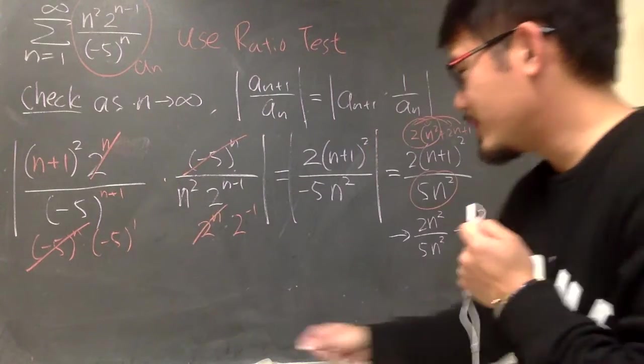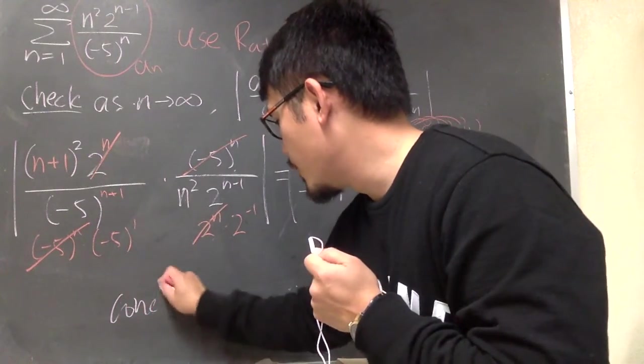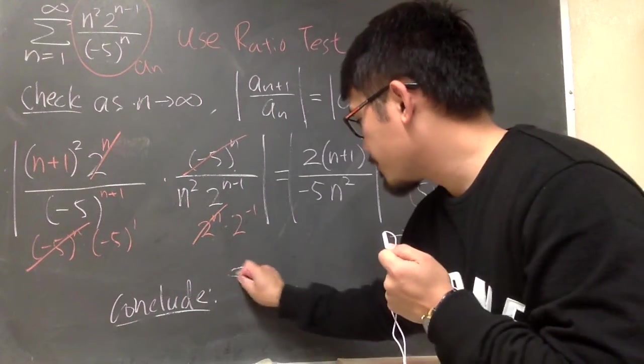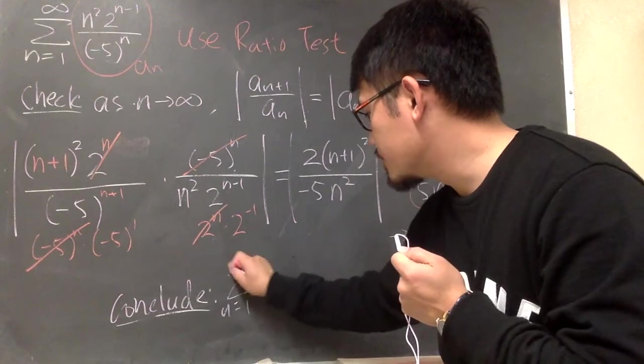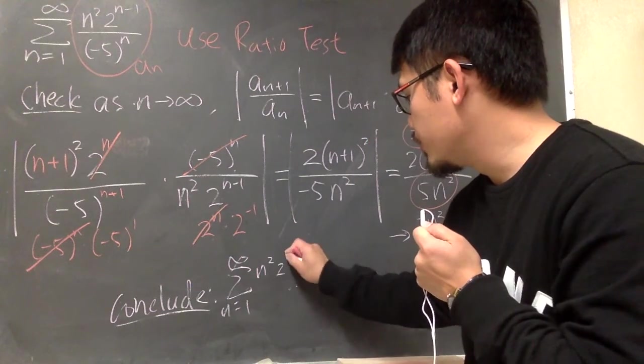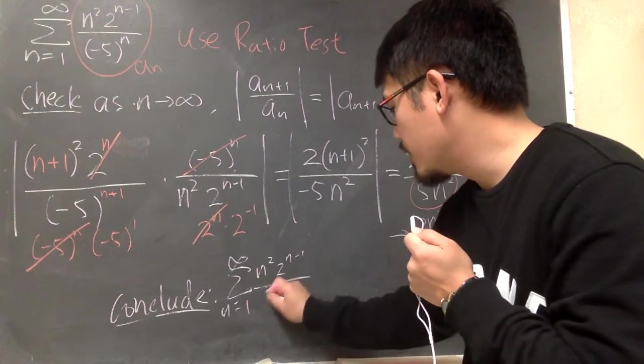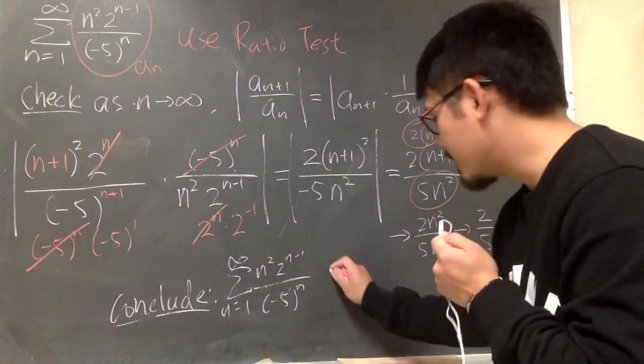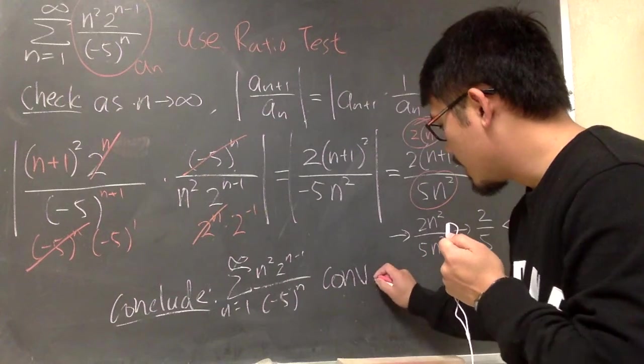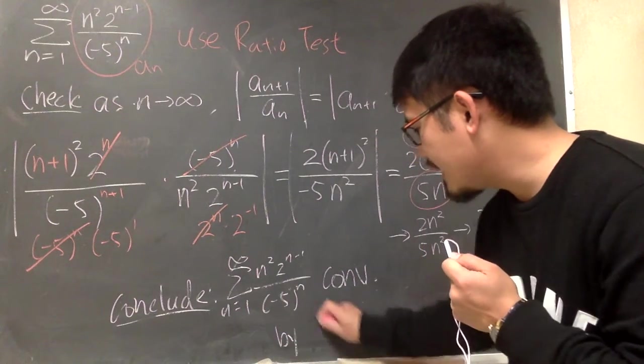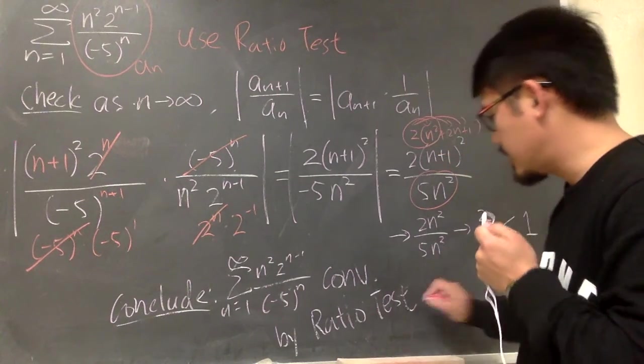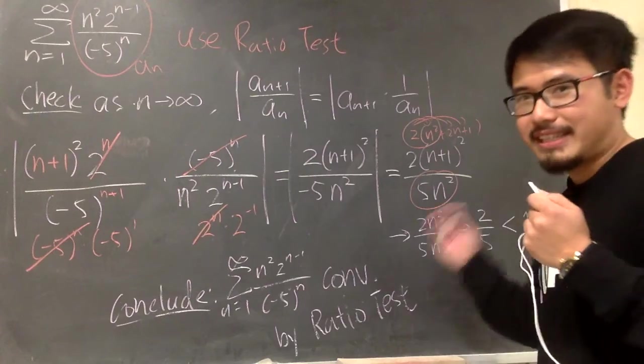And now, we'll just write down the conclusion. The original series, n goes from 1 to infinity, n square, 2 to the n minus 1 power over negative 5 to the n power, converges by the ratio test. That's it.